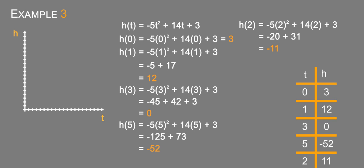So we can just do away with the 5 here and graph the others. At 0, we are at a height of 3. At 1, we are at a height of 12. At 2, we are at a height of 11. And at 3, we are at a height of 0.